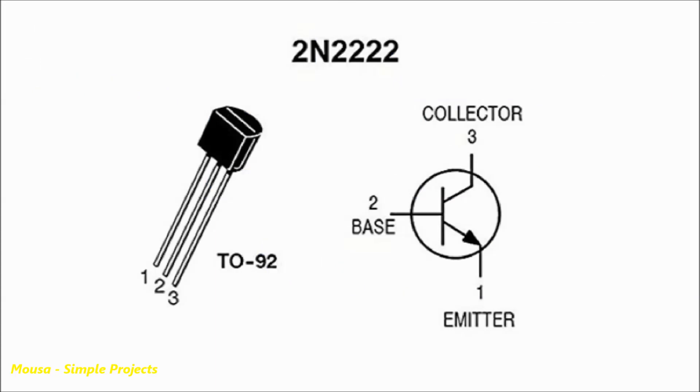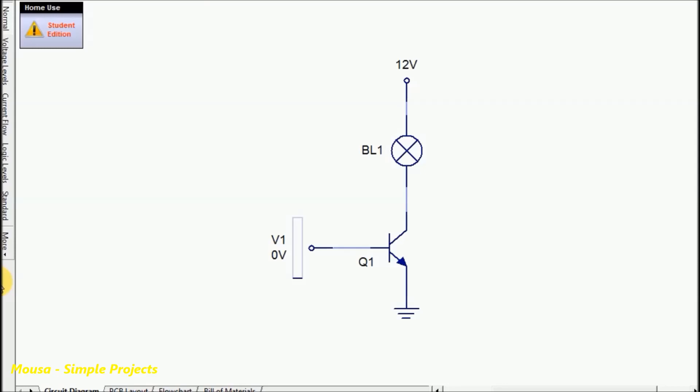A transistor has three pins: collector, emitter, and base. It works as a switch. Assuming we have a DC lamp connected in series with a transistor, in the normal situation the lamp doesn't work. But when we connect a positive voltage to the base of the transistor, the transistor allows current to flow from collector to emitter and the lamp lights up.